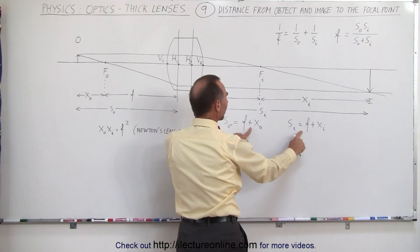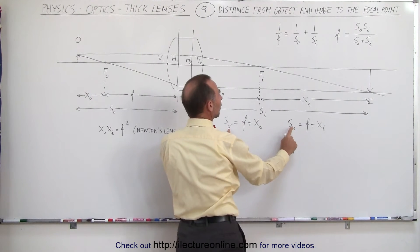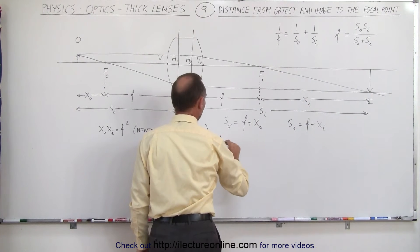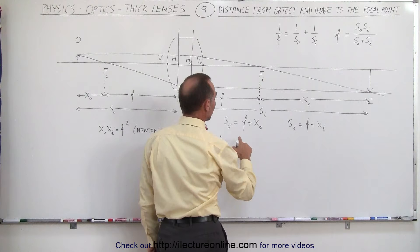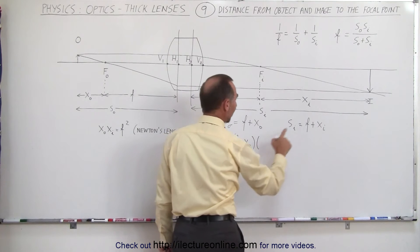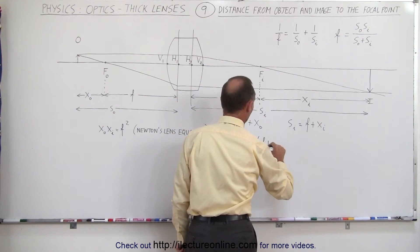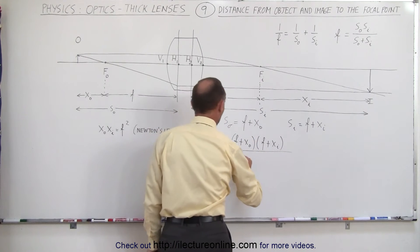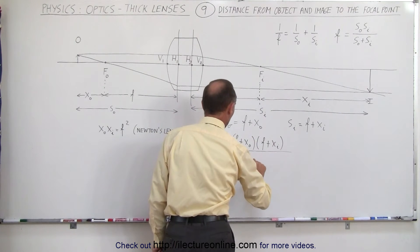If we plug these two values in for the object distance and image distance in our equation over here we get the following equation. f is equal to the object distance which is f plus x sub o, multiplied times s sub i which is f plus x sub i, all divided by s sub o which is f plus x sub o.